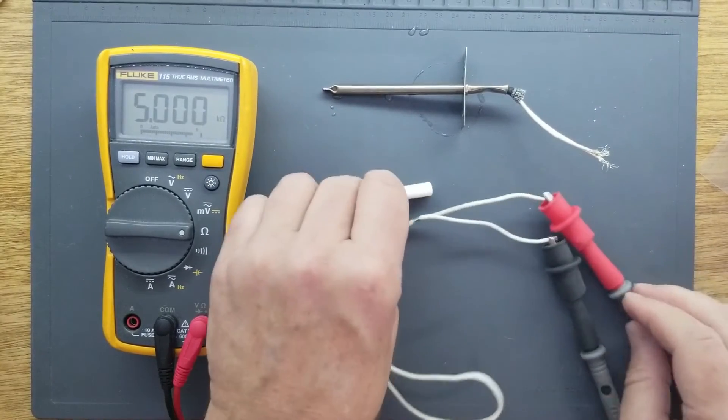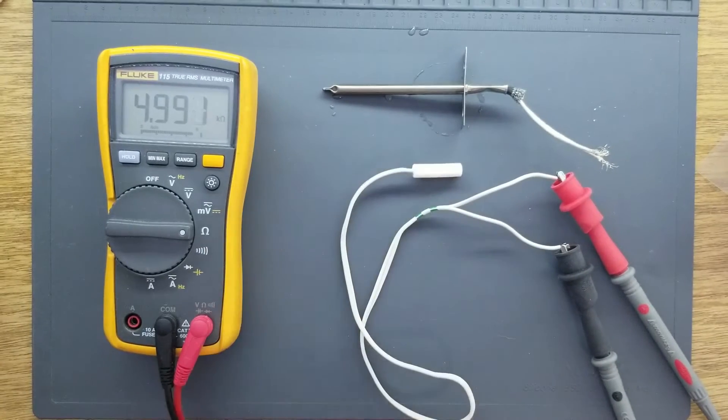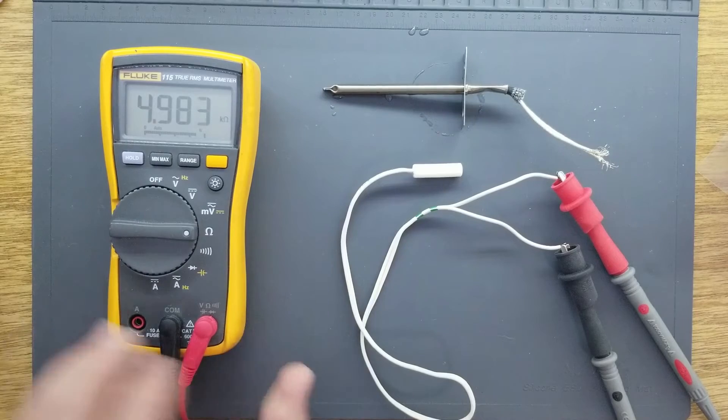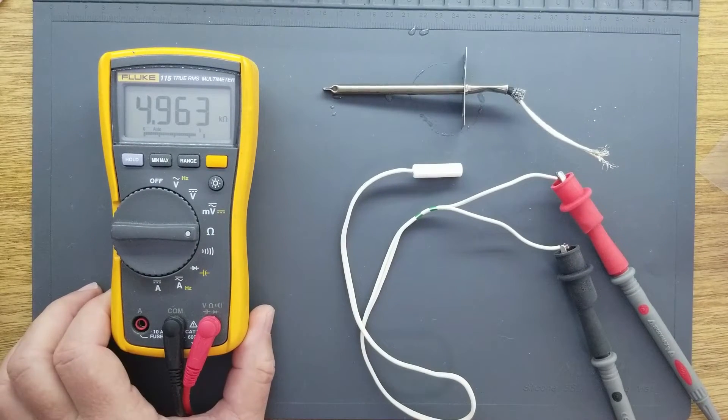This is a negative temperature coefficient thermistor, or NTC, out of a refrigerator. I've got it hooked up to an ohmmeter, and right now we've got 4.96 K.